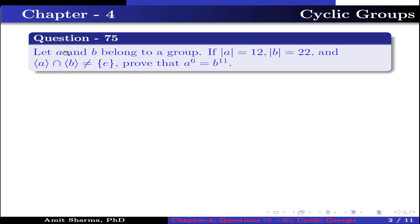Question number 75. Let A and B belong to a group. If the order of A is 12 and the order of B is 22, and the group generated by A intersecting the group generated by B is not equal to the identity, prove that A to the power 6 is equal to B to the power 11.